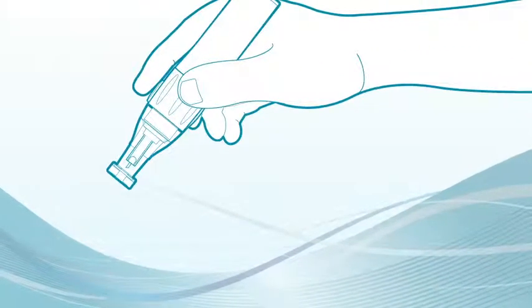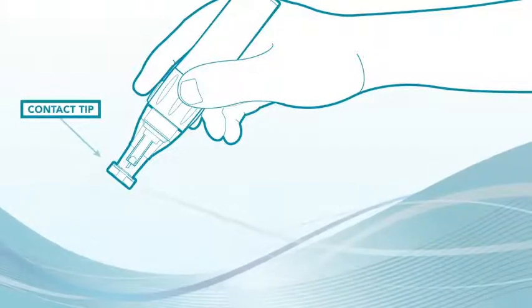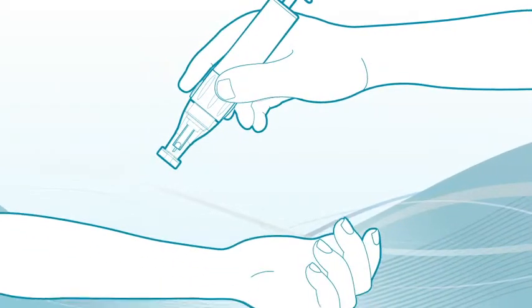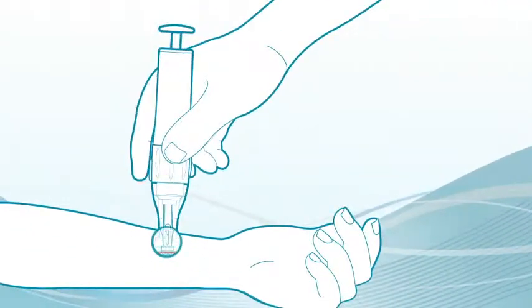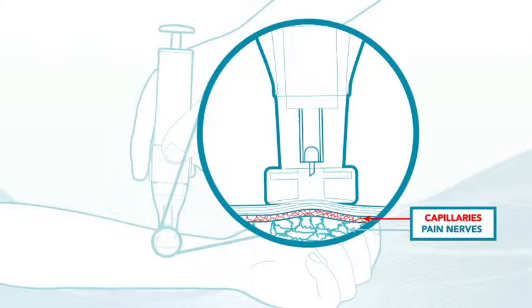First, Gentile precisely controls lancing depth by use of its contact tips. Because we all have different skin thicknesses and blood viscosities, it's important to accurately control lancing depth so you draw only from your capillaries but not so deep as to reach your pain nerves.